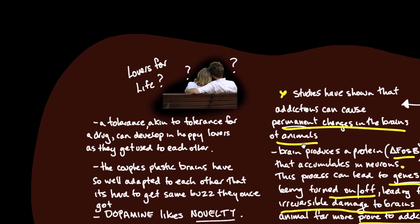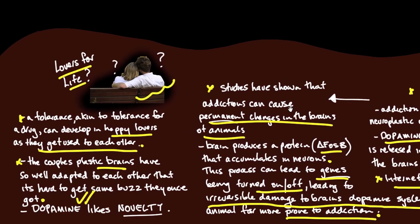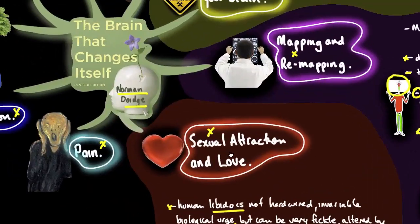Comment on lovers for life. A tolerance akin to a tolerance for a drug can develop in happy lovers as they get used to each other. The couple's plastic brains have so well adapted to each other that it's hard to get the same buzz they once got. Dopamine loves novelty. So to keep the relationship healthy, they suggest making things novel to ensure this drug here keeps getting fired.